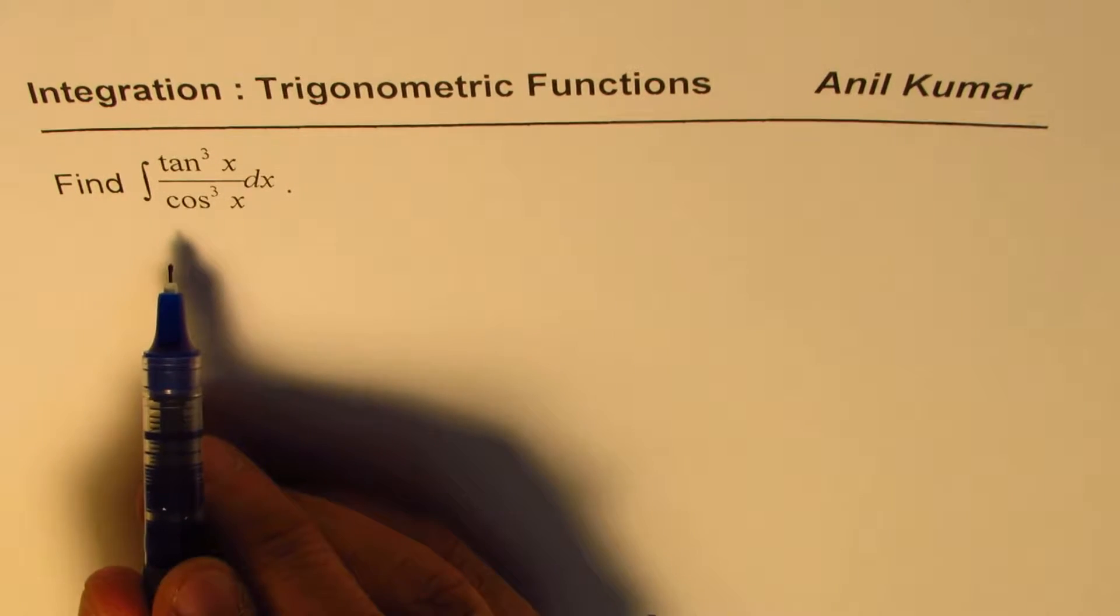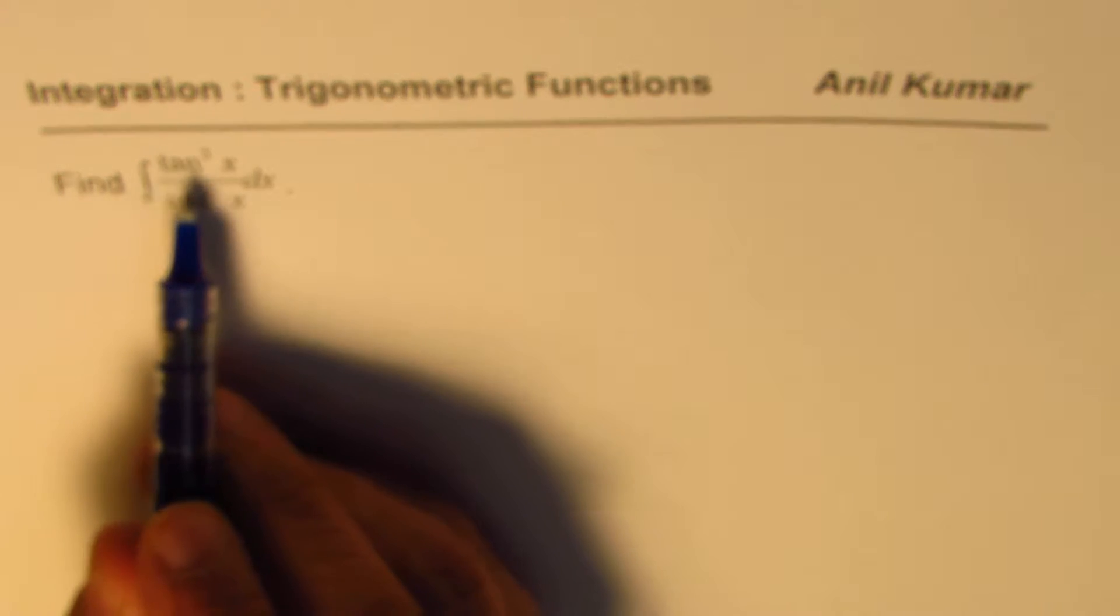Well, there are different ways of doing it, but if we convert tan into sine and cos, it might be simpler. Tan is sine over cos, so we could write this as integral of sine cube x over cos to the power of 6x,